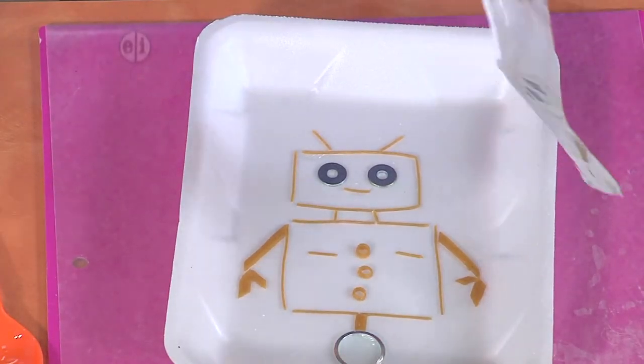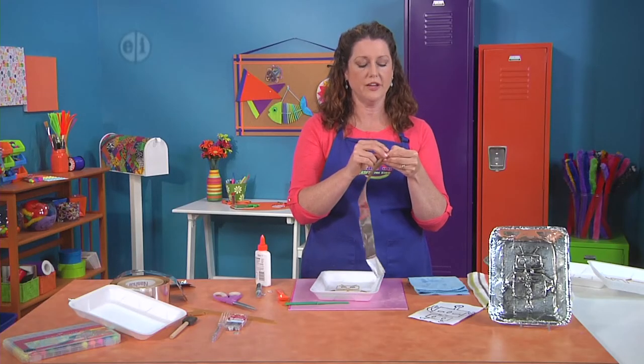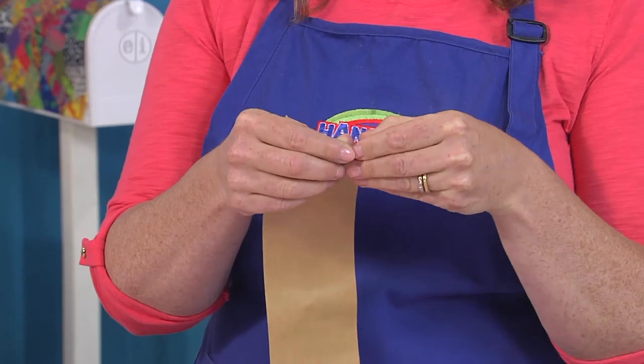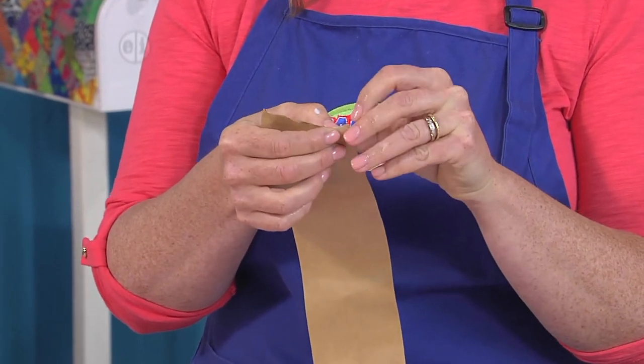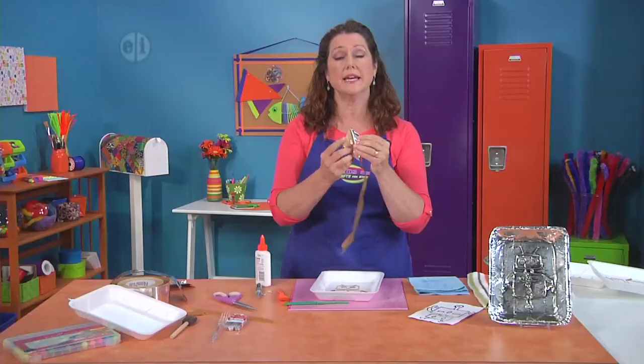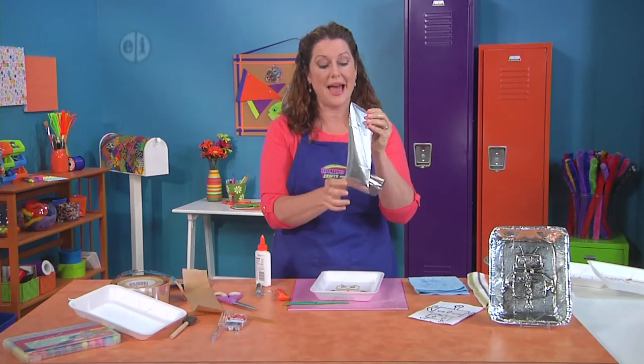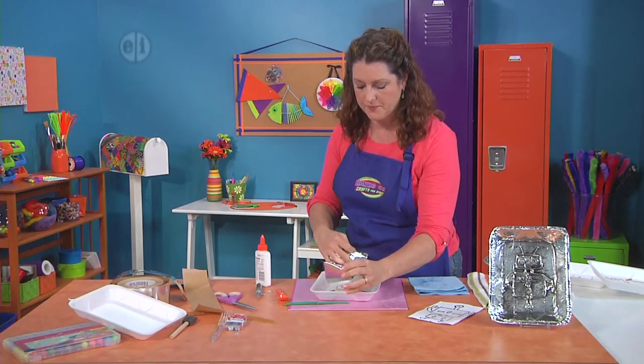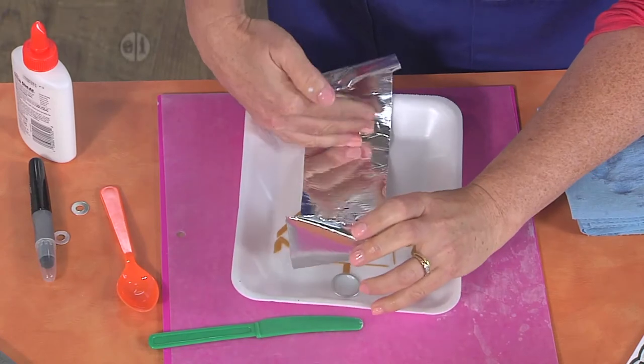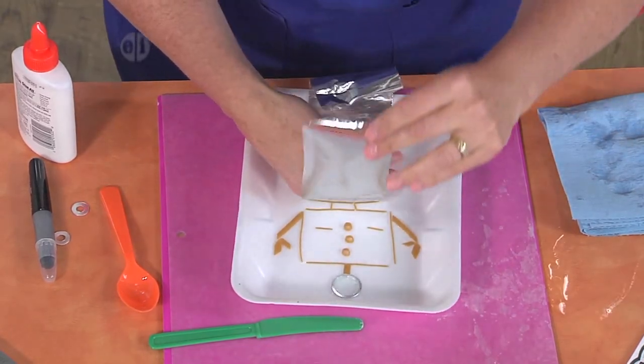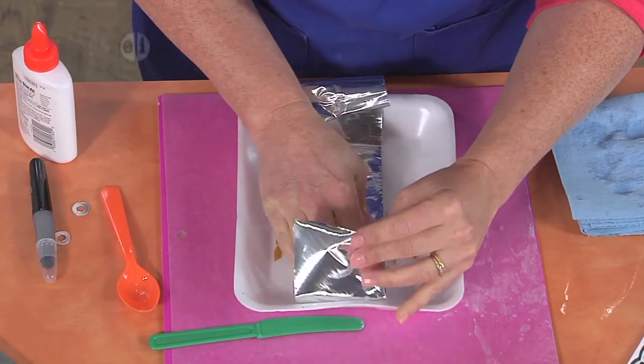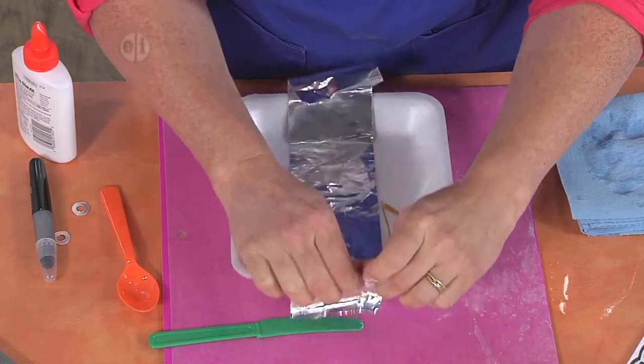Now we're going to take our metal flashing tape. Now you can rip this with your fingers or it will cut with scissors either way. It won't hurt your scissors either. But what makes this fun is that it is adhesive backed, so you don't need any extra glue. So I'm just going to put this down starting at the top. I'm going to roll it down over the middle and around the edge of the tray.